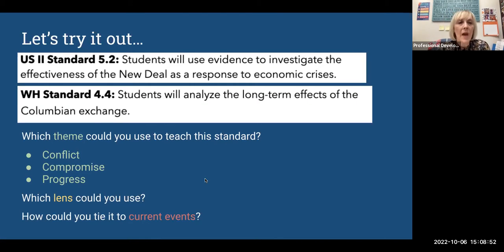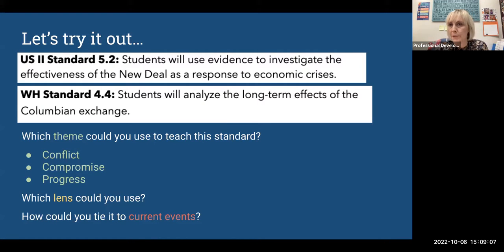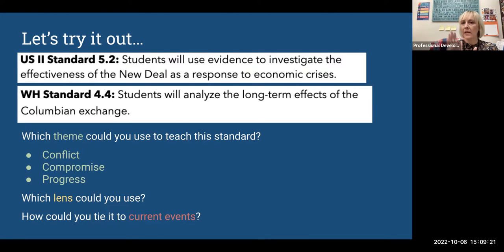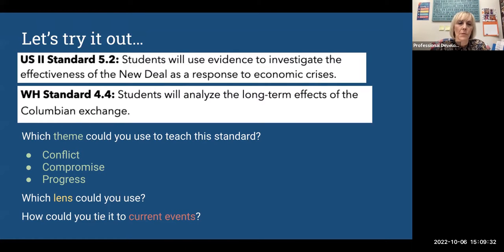Let's try it out. I've chosen two different standards: U.S. History Standard 5.2 and World History Standard 4.4. For today, let's use U.S. History Standard 5.2, which states: students will use evidence to investigate the effectiveness of the New Deal as a response to economic crisis. Let's think about how this standard connects to themes, lenses, and current events. Which theme could you use to teach this standard? As I've presented this before, everyone agrees it really applies to all three — conflict, compromise, and progress.